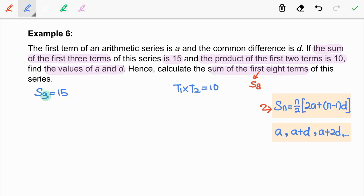So we have 3 over 2 times 2A plus 2D is equal to 15. By simplifying this, we have A plus D equal to 5. So this is our first equation.